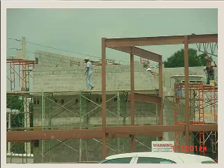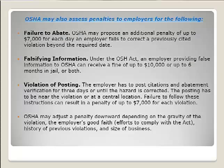Something like employees above 10 feet with no fall protection, no guardrails, and no personal fall arrest system would be at least a serious violation. OSHA can also assess penalties for failure to abate — $7,000 for each day an employer fails to correct a previously cited violation. Falsifying information carries a fine up to $10,000 or six months in jail. Violation of posting requirements — citations must be posted for three days or until the hazard is corrected — also carries a $7,000 penalty.